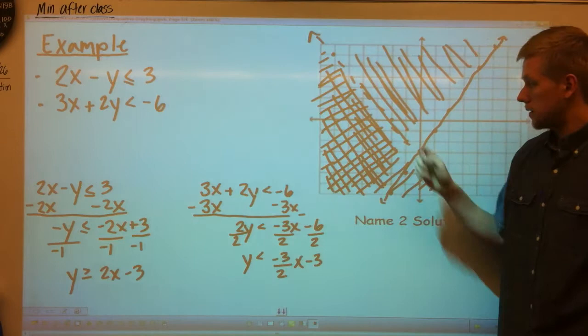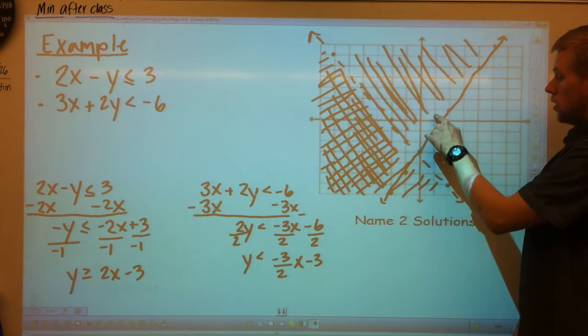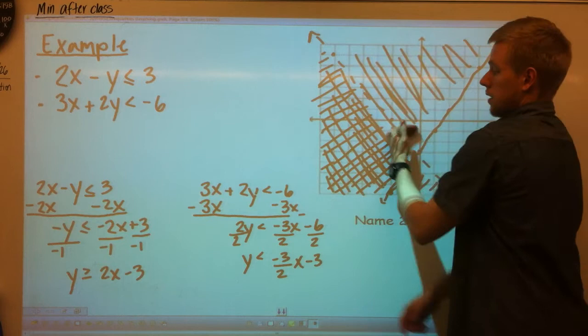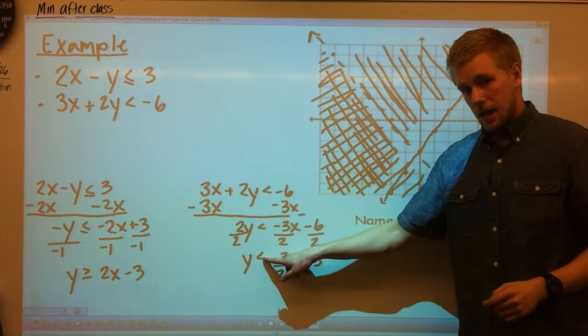My first one, 2x minus 3, start at negative 3, go up 2 over 1, up 2 over 1. It is a solid line going through those points because there's a line underneath it that is greater than or equal to. So I could have solutions on this line. I shade above because it's greater than, so anything above this line works.